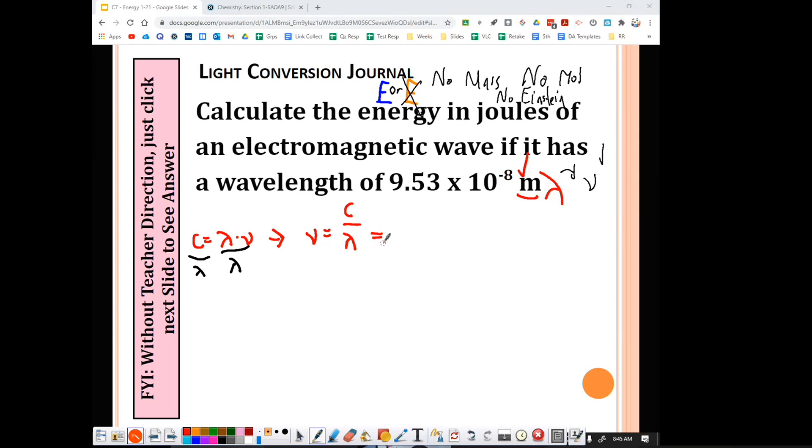So what does this mean? Well, C is always the same thing. C is 3 times 10 to the negative 8th power, and my wavelength I can get from the problem that's up there. OK, so wavelength is listed right here. That was very sloppy, but whatever 9.53 times 10 to the negative 8.